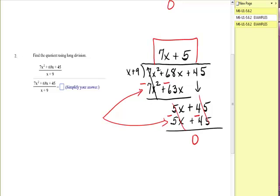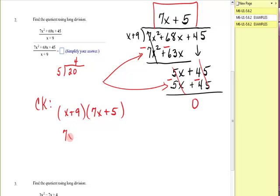I will mention that you can check these problems just like you check any division. If you say 5 goes into 20 four times, you can check it because 4 times 5 is 20. If you multiply x plus 9 times 7x plus 5, and I'm going to use FOIL, the product of the first is 7x squared. The outer product is 5x. The inner product is 63x. Add them together for 68x. And 9 times 5, which is the last, is 45. Look at this dividend. Look at this answer. So it does check out to be correct.